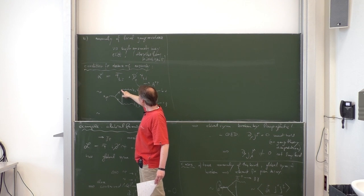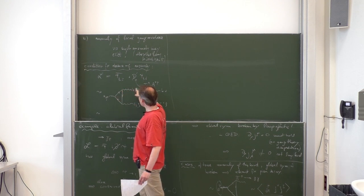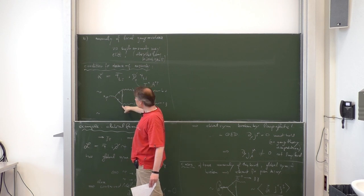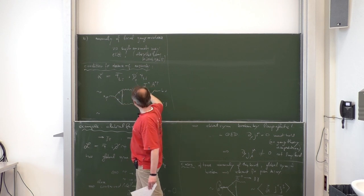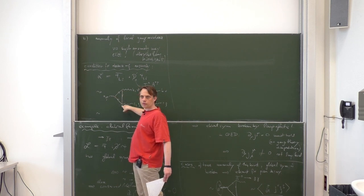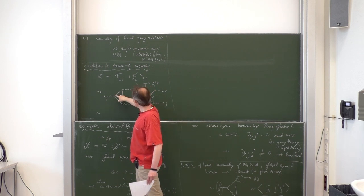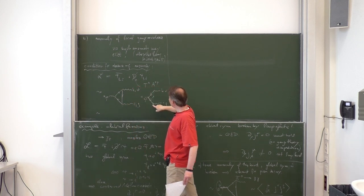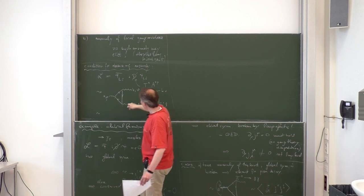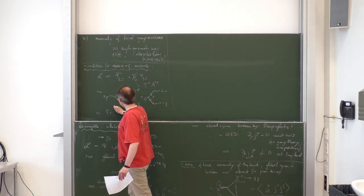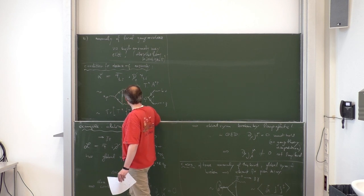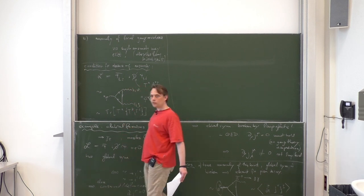The only thing we need to take care of is how the generators — the structure of the gauge group and representation — enter the calculation. At each vertex you have a generator T^A, T^B, T^C, and since it is a loop you get the trace of the product of three such generators. The first diagram gives Tr[T^A T^B T^C] and the second gives Tr[T^A T^C T^B]. Adding them together, the whole thing is proportional to Tr[T^A {T^B, T^C}].